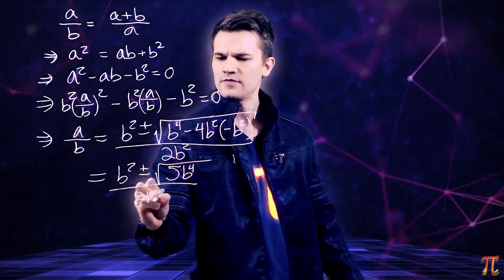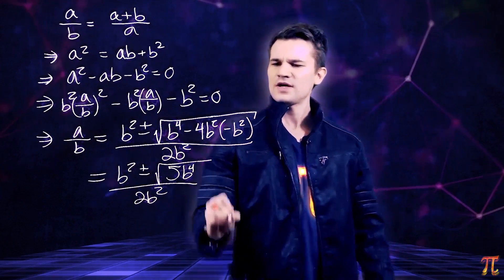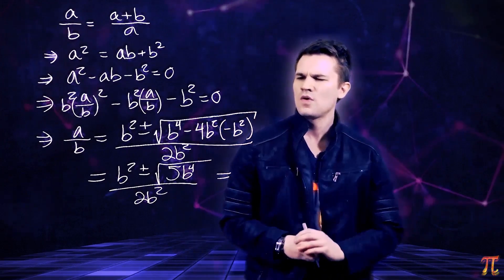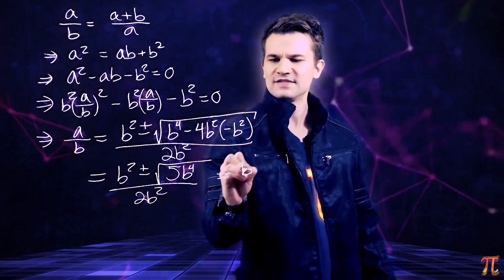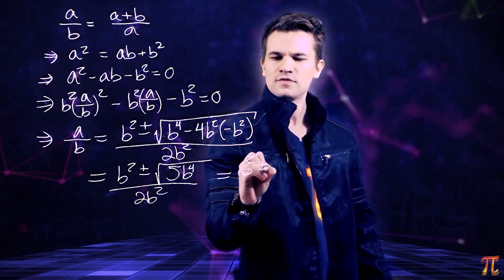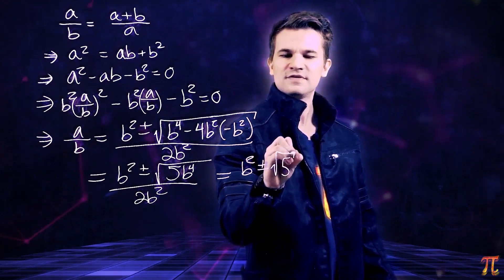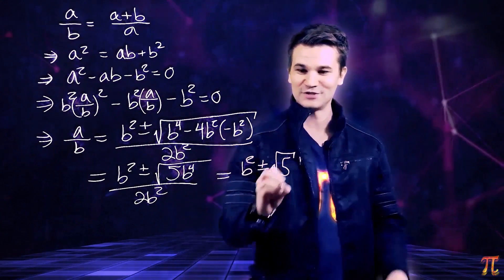Ah, okay. And now every term has a b squared in it, so we can cancel, and we get 1 plus or minus the square root of 5 over 2.